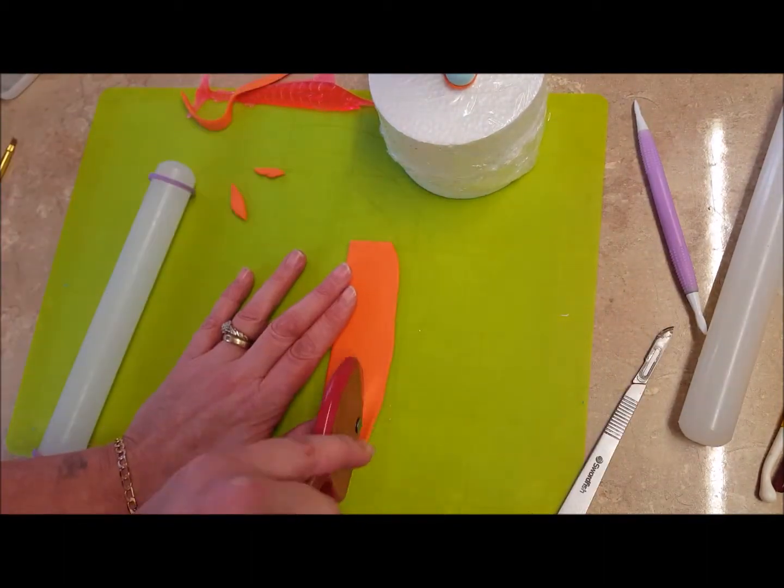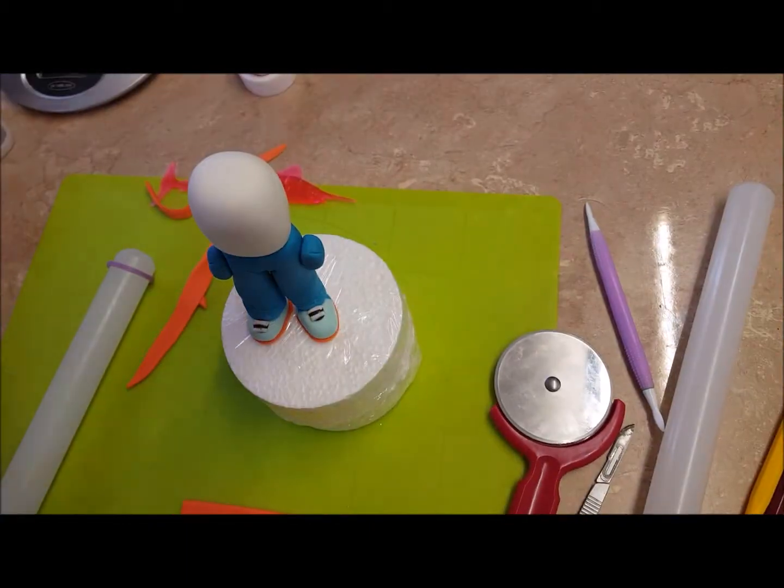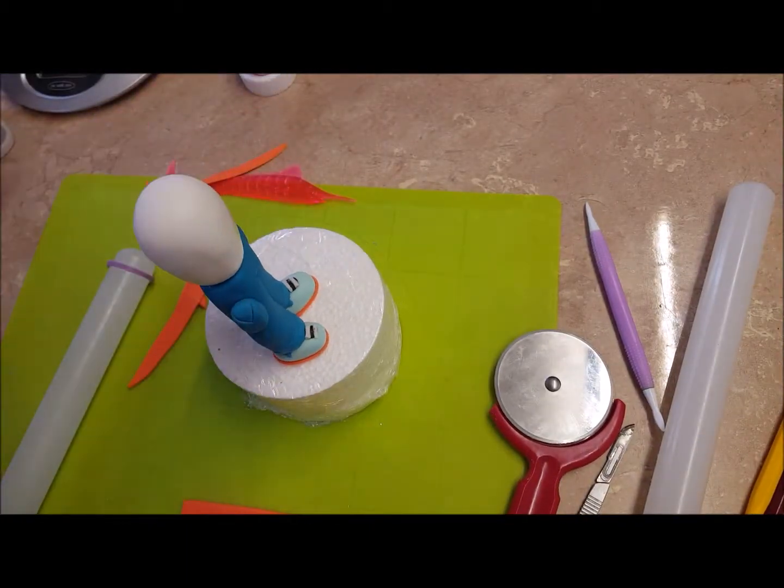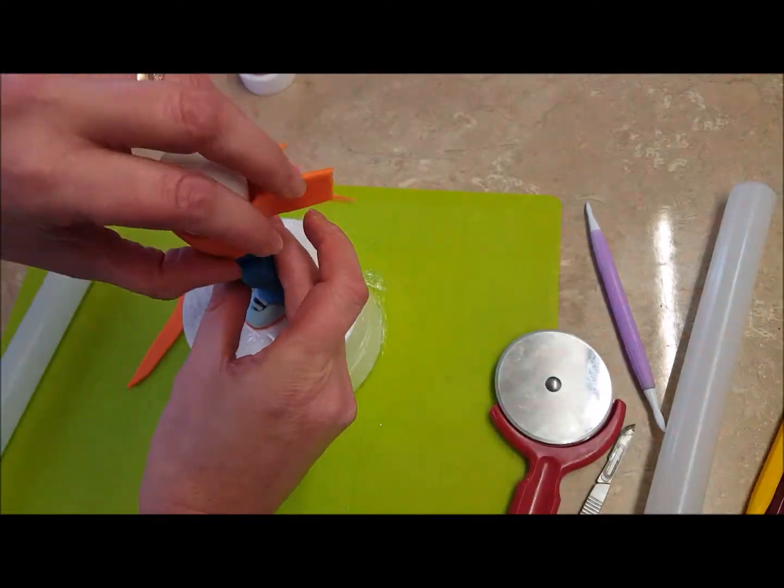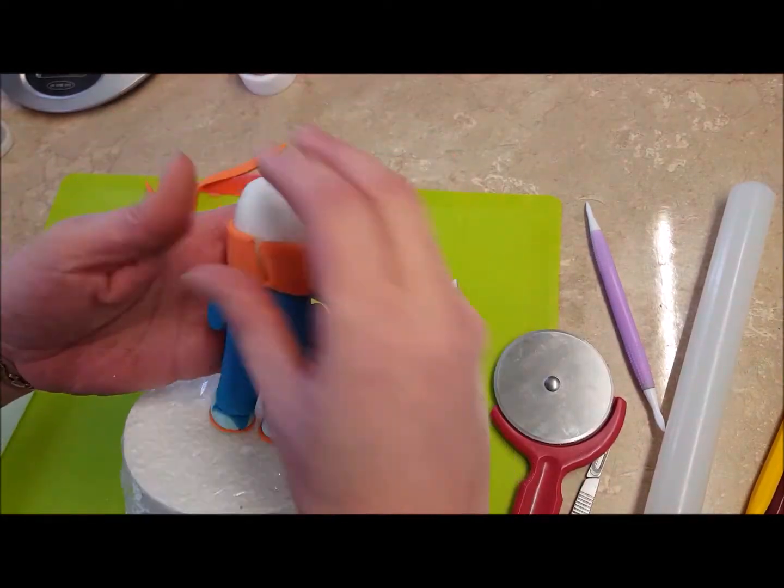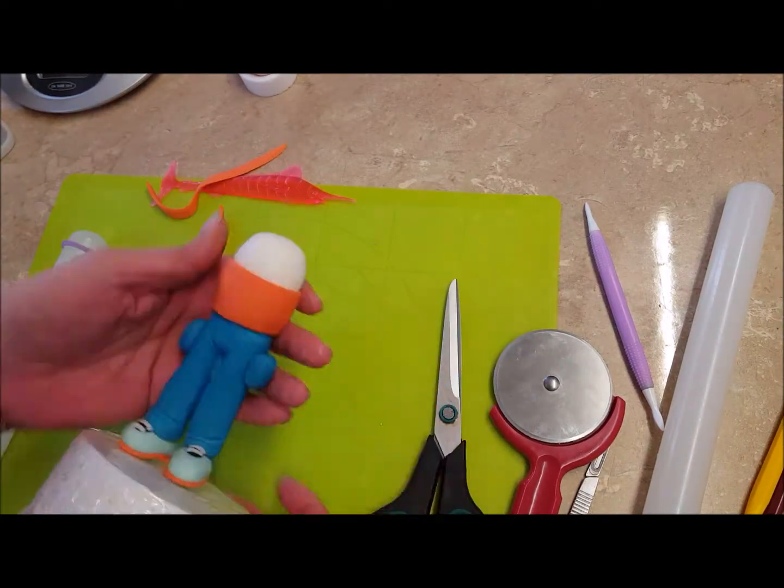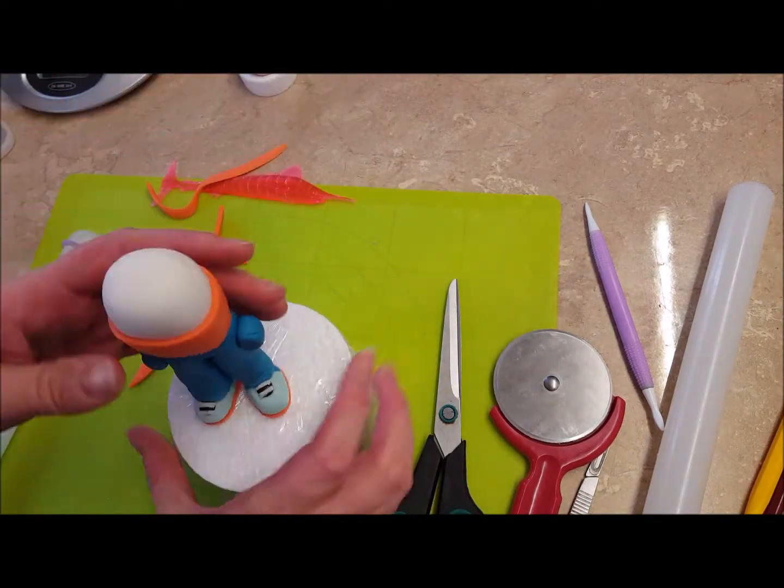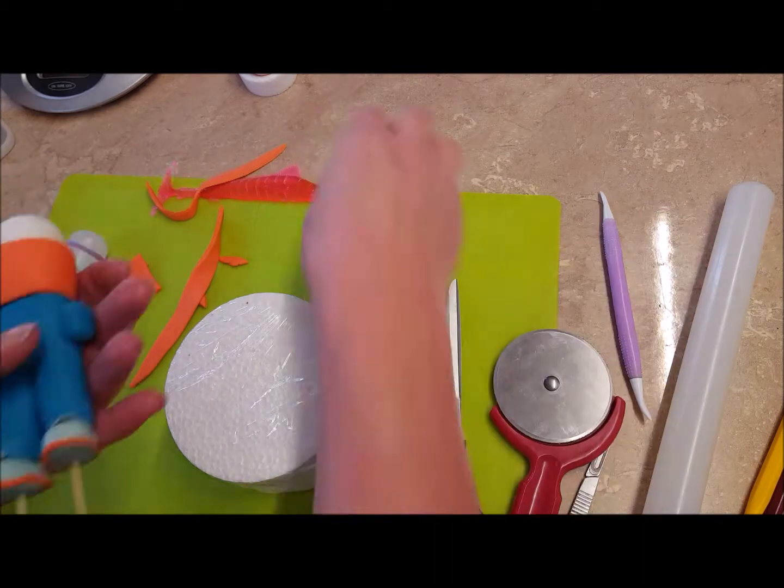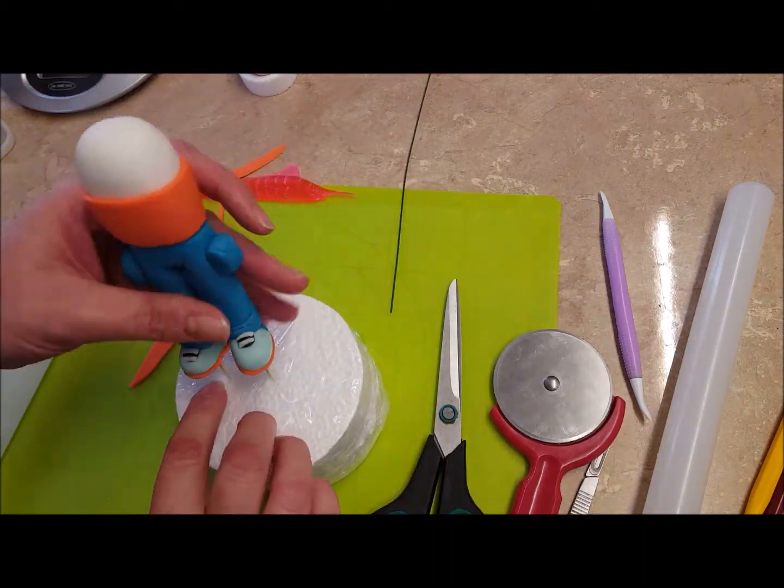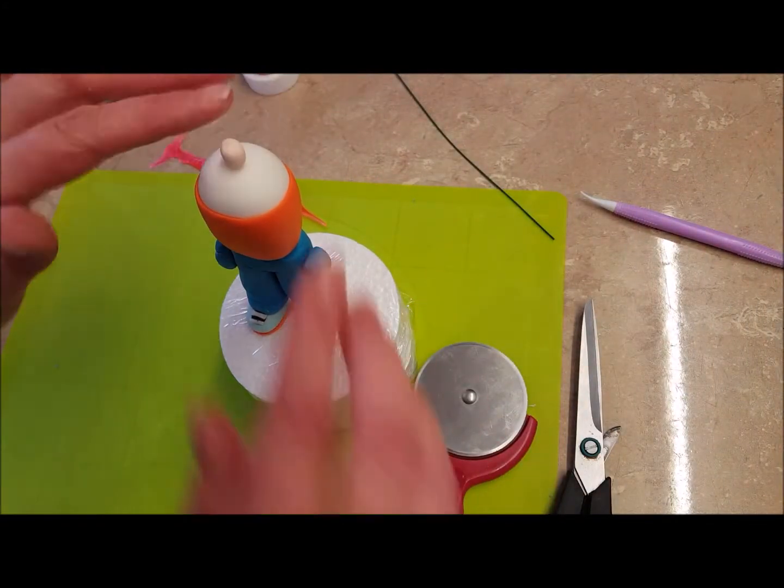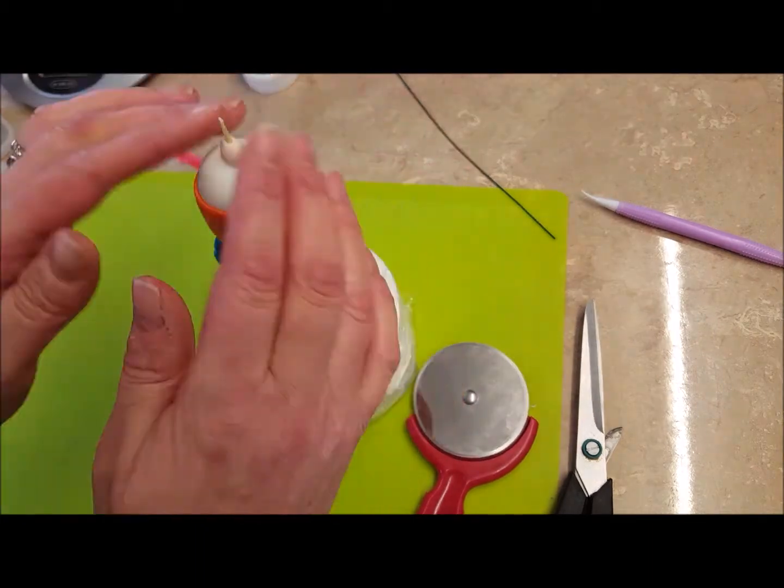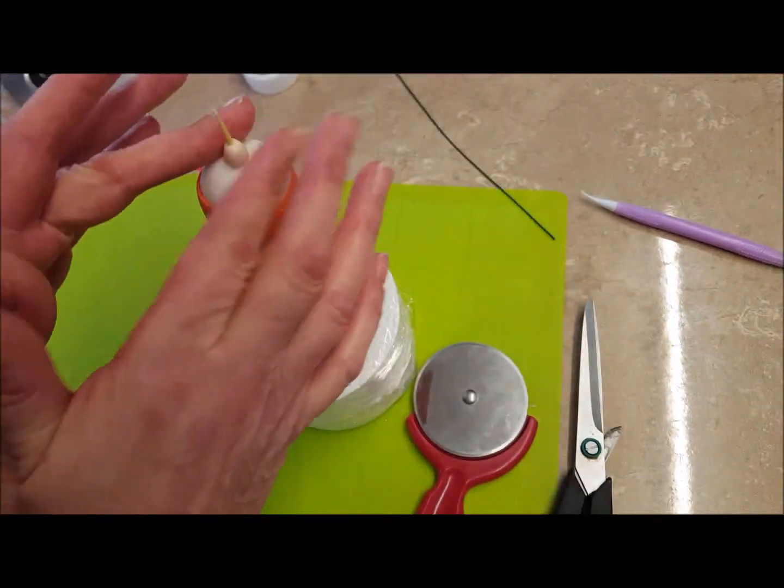Just eyeball this basically, and stick that around. It needs to go about three quarters of the way up. Add a cocktail stick in there for the neck. You need just a small piece of flesh color just to stick on the top there.